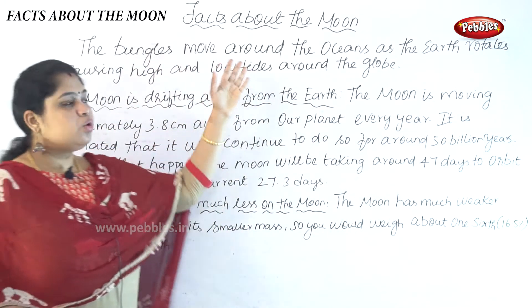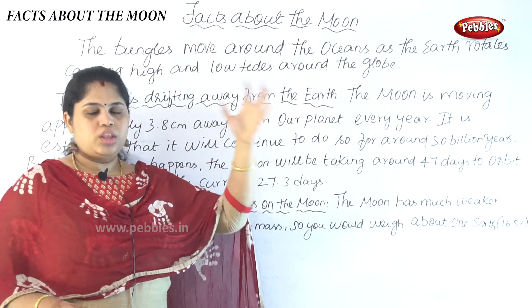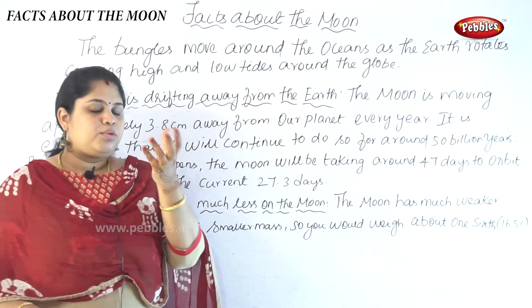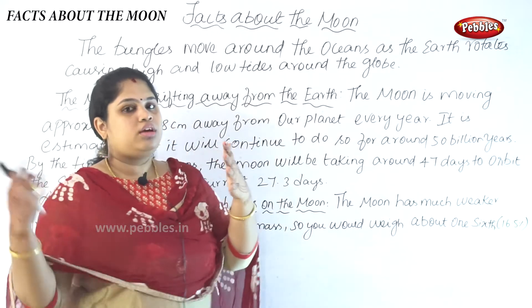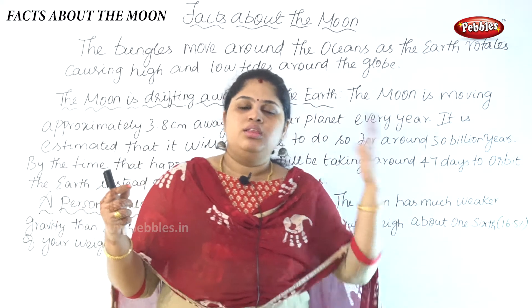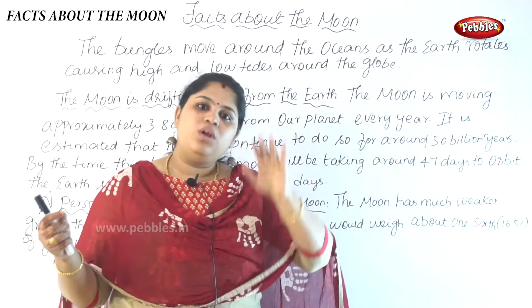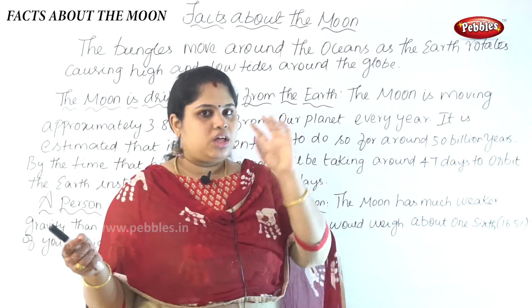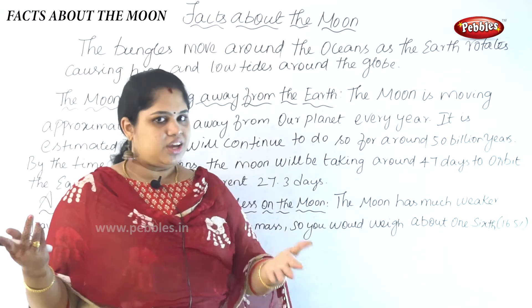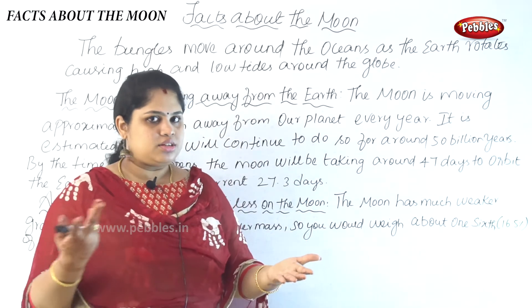The bulges move around the ocean when the earth rotates, because the bulges are on the earth. So when the earth rotates, the bulges on the earth also rotate.